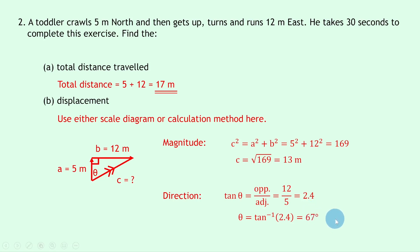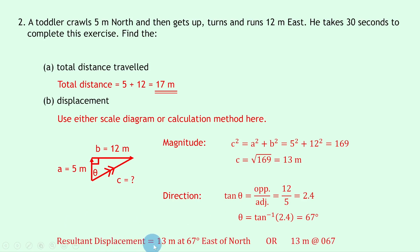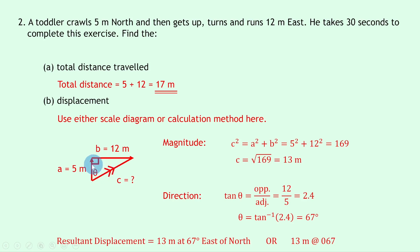We then find theta by doing inverse tan of 2.4, which equals 67 degrees. We can then write down our final statement — remember we need to use this angle with either compass points or bearings. So we can say the resultant displacement is 13 meters at 67 degrees east of north, because the resultant vector has moved 67 degrees away from north towards east. Or we could say 13 meters at a bearing of 067, going from north round to the resultant vector.